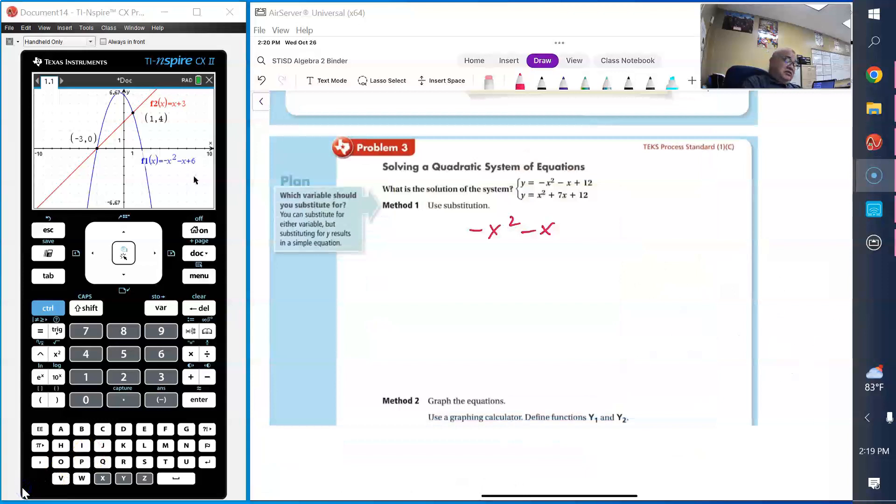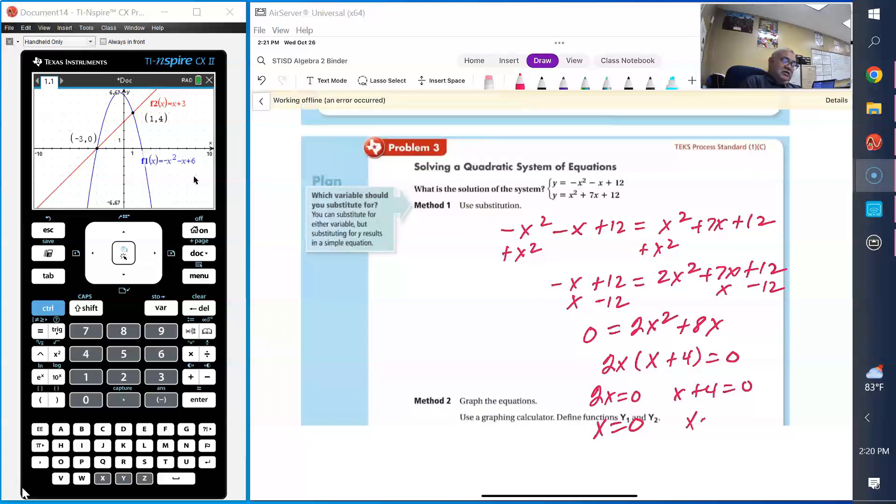I have negative x squared minus x plus 12 equals x squared plus 7x plus 12. Add x squared to both sides, then add x to both sides and subtract 12. So I have 0 equals 2x squared plus 8x. You can factor out 2x, giving you 2x times x plus 4 equals 0. So x equals 0 and x equals negative 4.